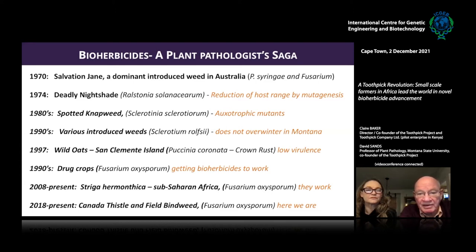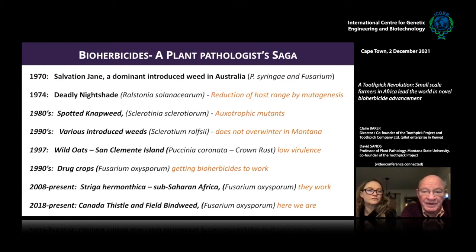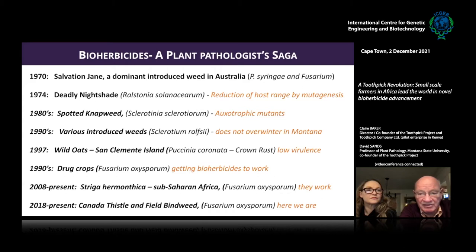Then we worked with Sclerotinia, which kills a lot of weeds. We made some auxotrophic mutants so they would only kill if you sprayed them with a chemical they required. Then we worked on several fungi that do not overwinter in the cold of Montana, and that seemed to work okay.